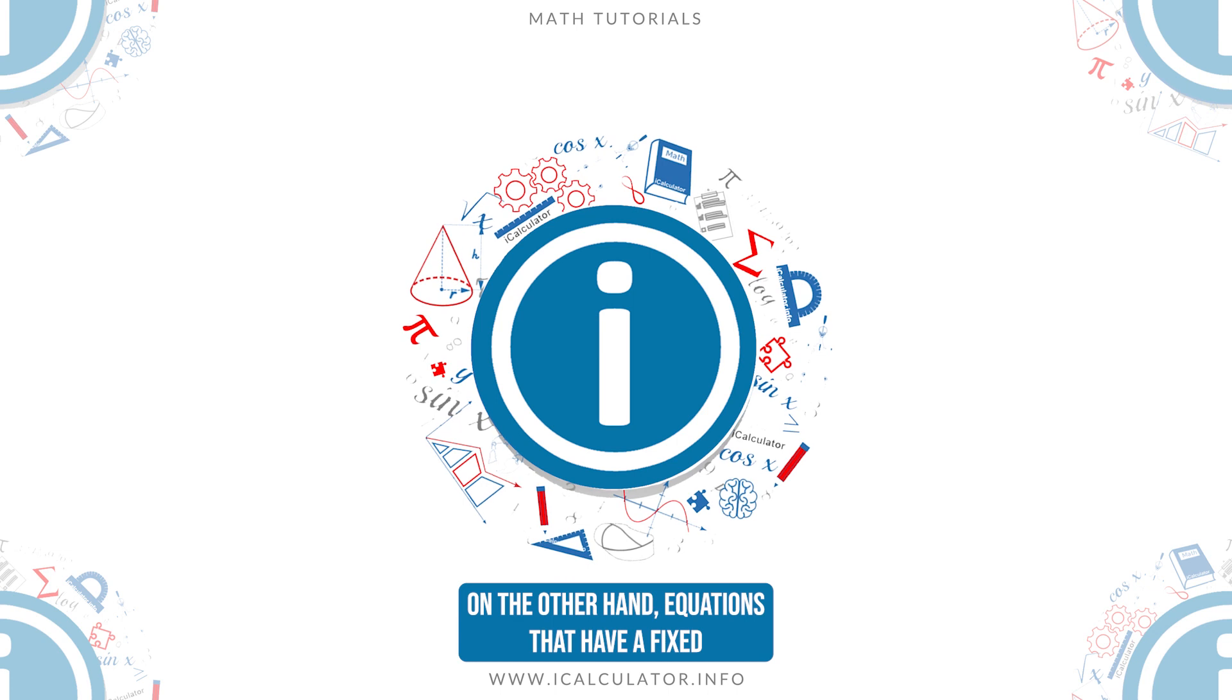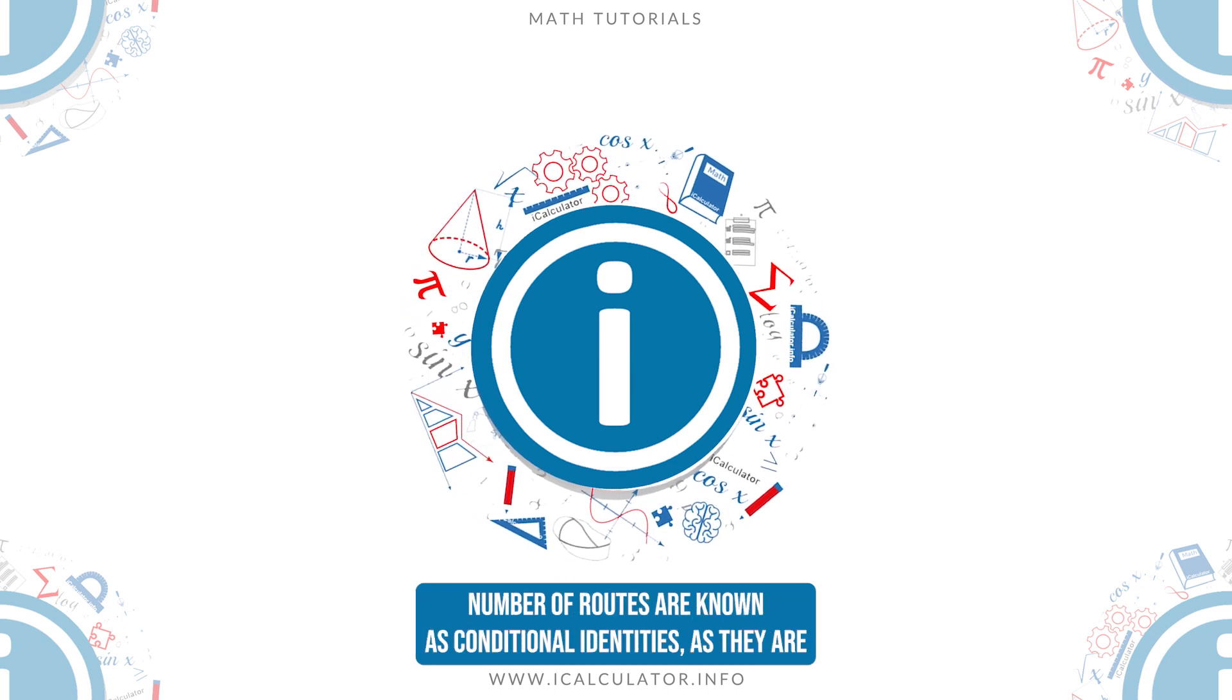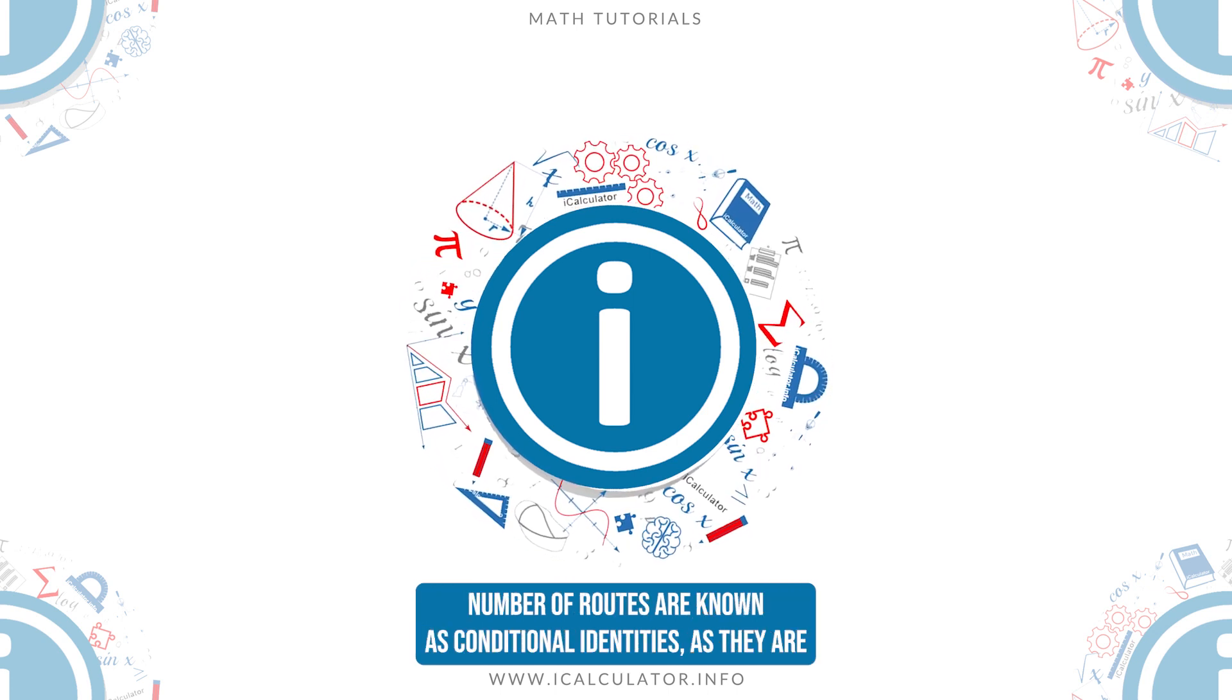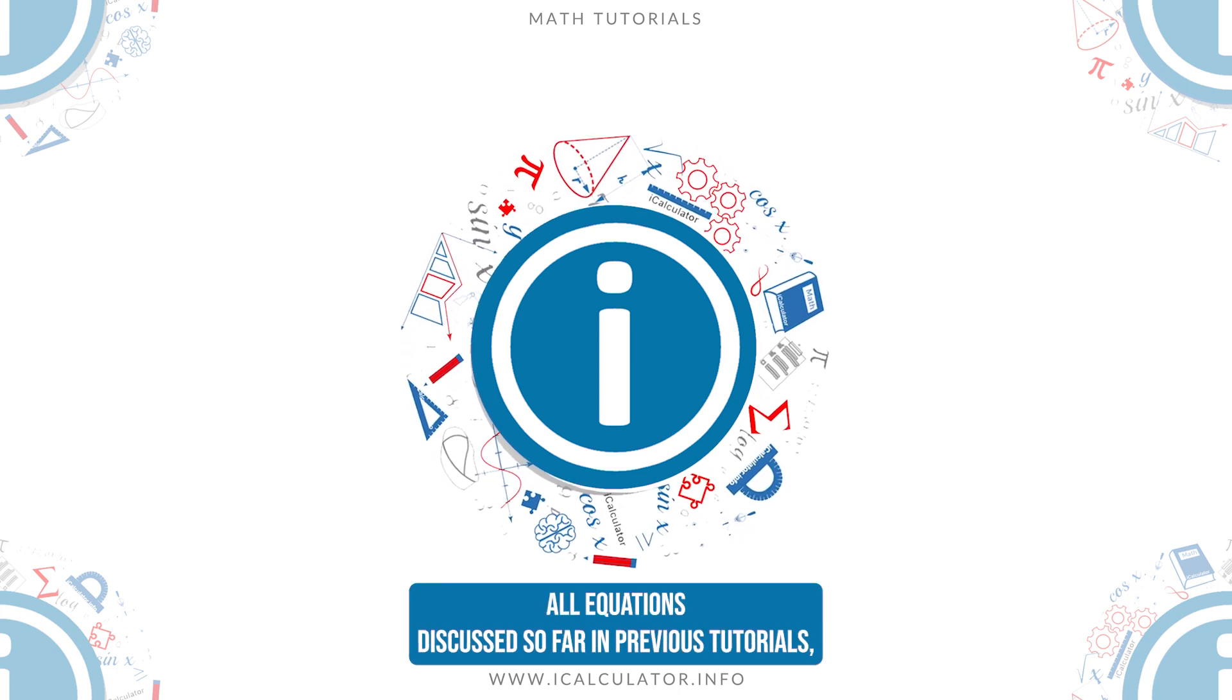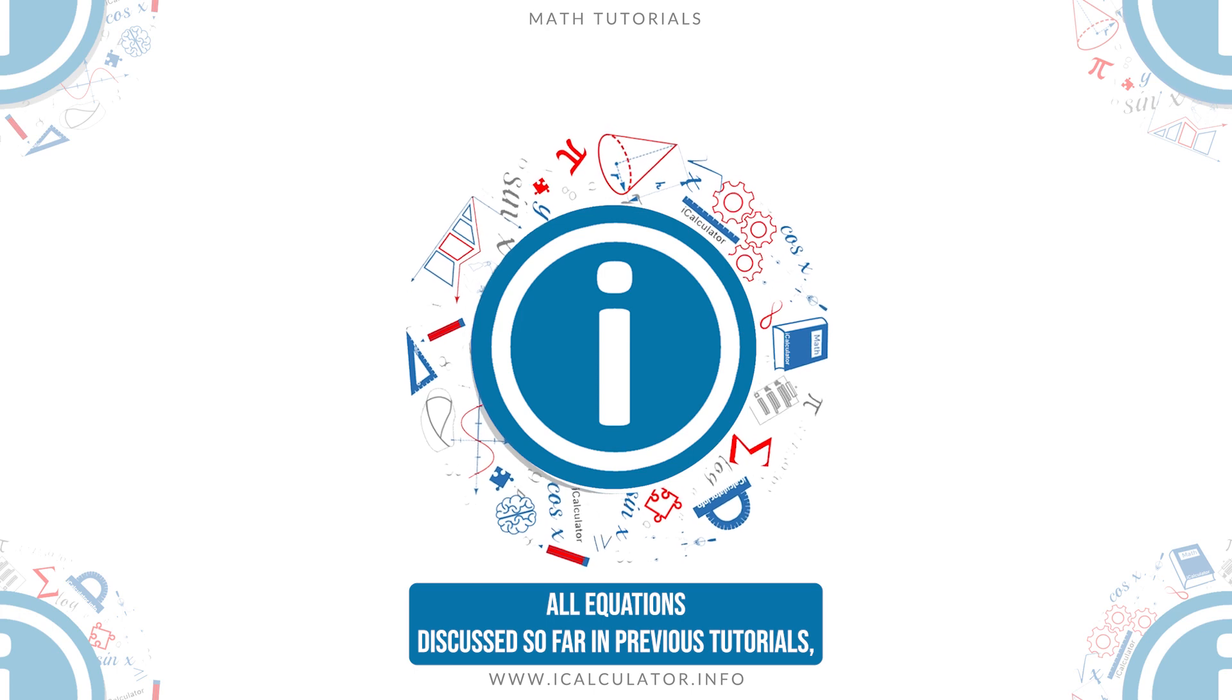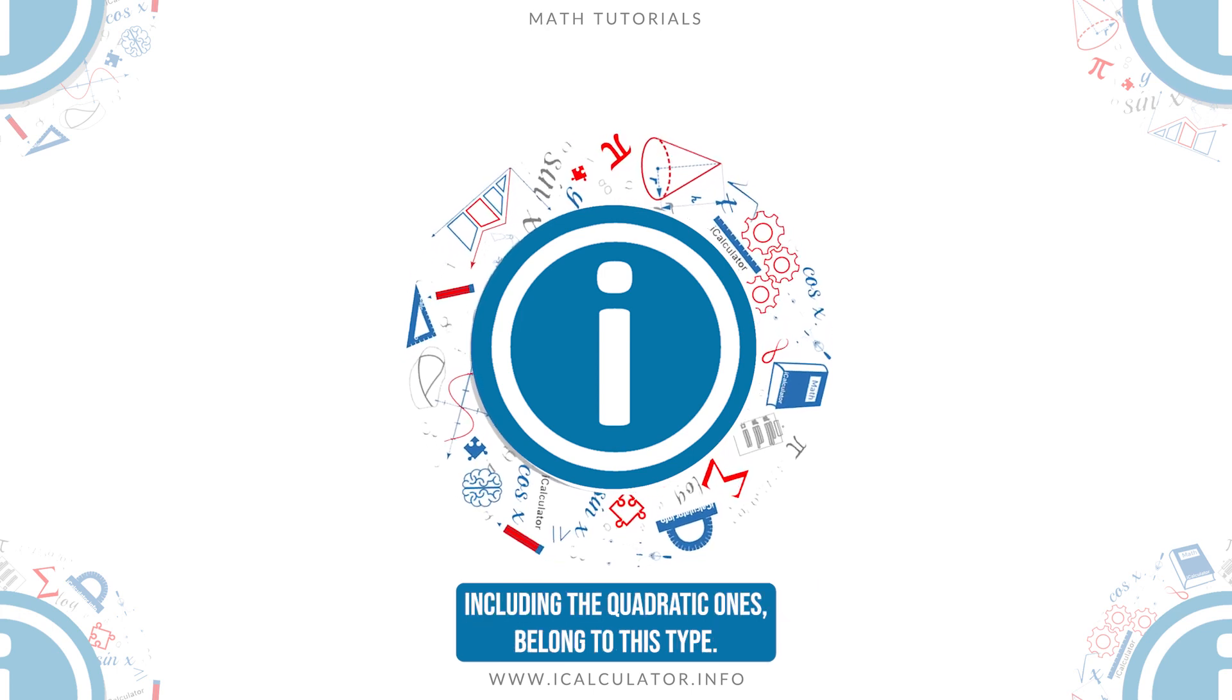On the other hand, equations that have a fixed number of roots are known as conditional identities, as they are only true for specific values of the variables. All equations discussed so far in previous tutorials, including the quadratic ones, belong to this type.